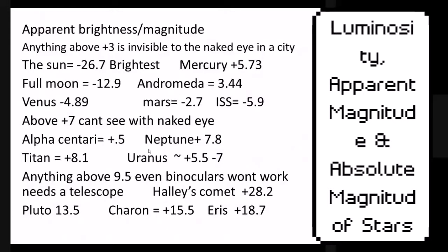Anything above 7 on the apparent magnitude scale, you can't actually see with your naked eye. Something like Neptune — you're not going to be able to see it with the naked eye, not even on the darkest of nights. Alpha Centauri, at positive 0.5, you might be able to see it if you went somewhere pretty dark. Titan — a moon of Saturn — you're not going to be able to see it; it's just too dim. Anything above 9.5 positive apparent magnitude, even binoculars won't work — you're going to need a telescope.